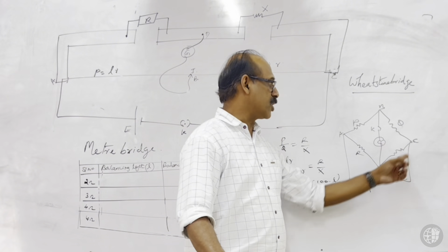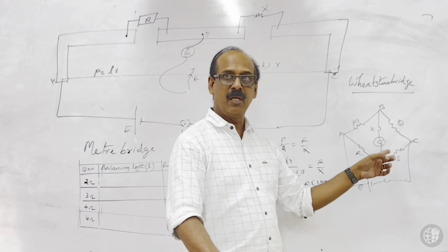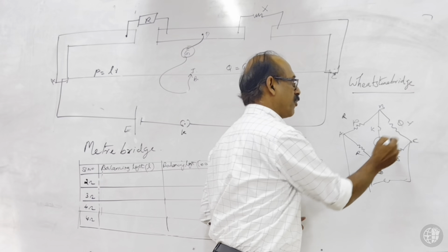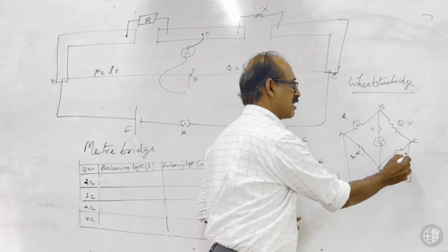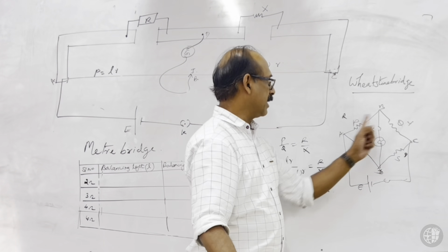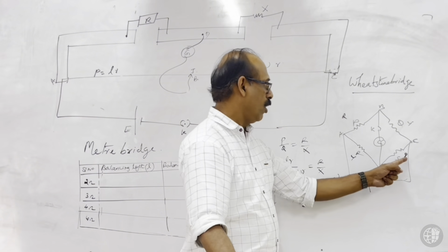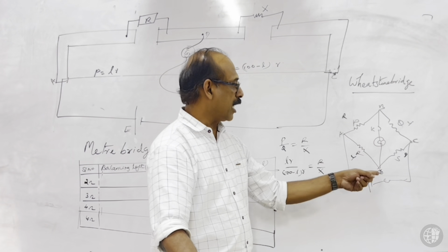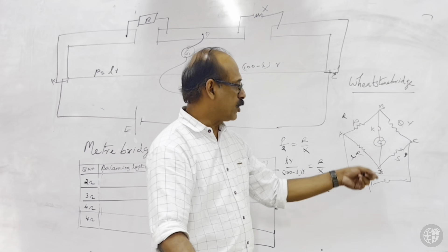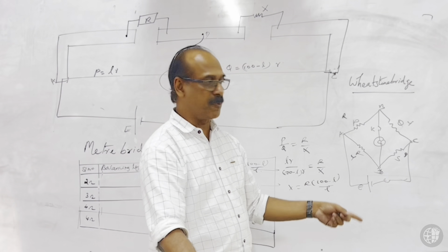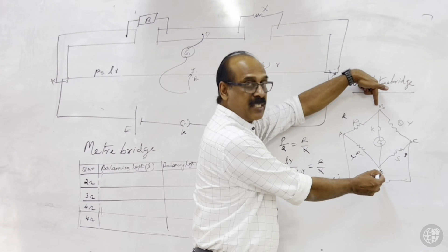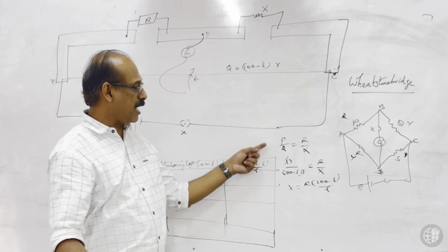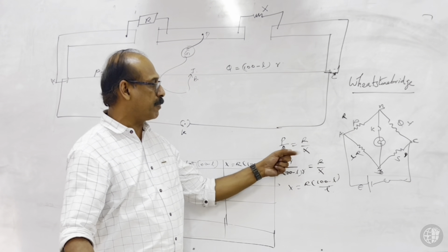At the balancing condition — for example when ratios are 4:2 and 8:4 — no current flows through the galvanometer because the potential difference is zero. At this condition, P divided by Q equals R divided by S. Since S is to be determined, we mark it X. This is the Wheatstone bridge principle on which the meter bridge is based.